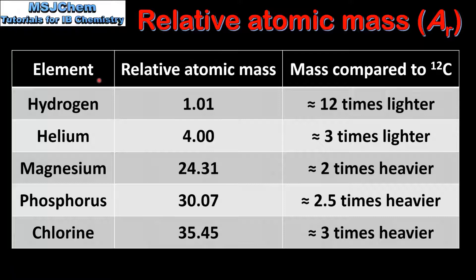In this table we have the element, its Relative Atomic Mass, and its mass compared to the isotope carbon-12. The first example is hydrogen, which has a Relative Atomic Mass of 1.01. This means that an atom of hydrogen is approximately 12 times lighter than an atom of carbon-12. Next is helium, which has a Relative Atomic Mass of 4.00, meaning that a helium atom is approximately 3 times lighter than an atom of carbon-12.